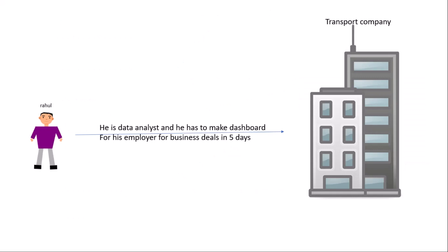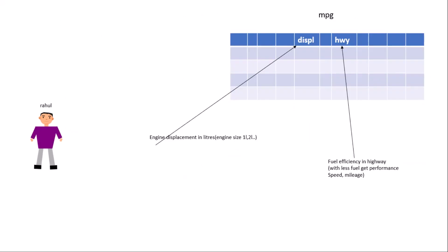Now let's suppose there is a Rahul and he is a data analyst. He has to make a dashboard for his employer for a business deal and the time bound is five days. He works in a transport company and observed two variables: one is DCPL — engine displacement in liters, which is just the engine size, like one liter or two liters — and HWI, which is fuel efficiency on the highway.